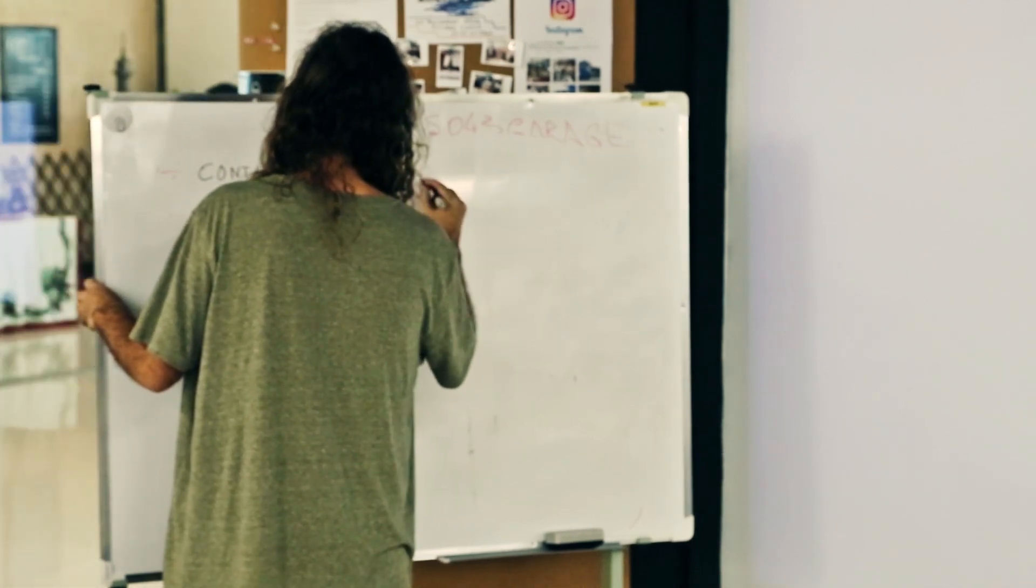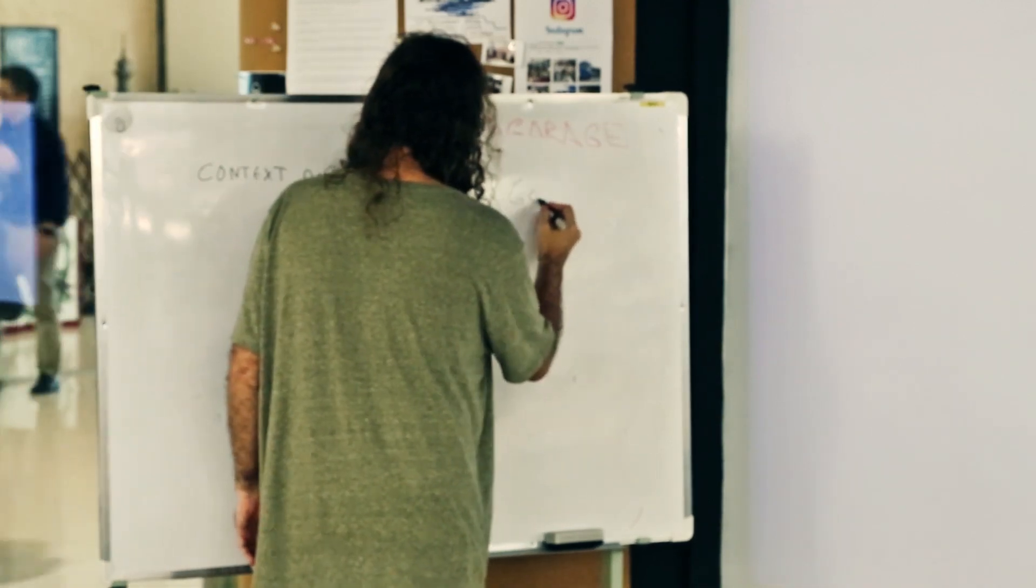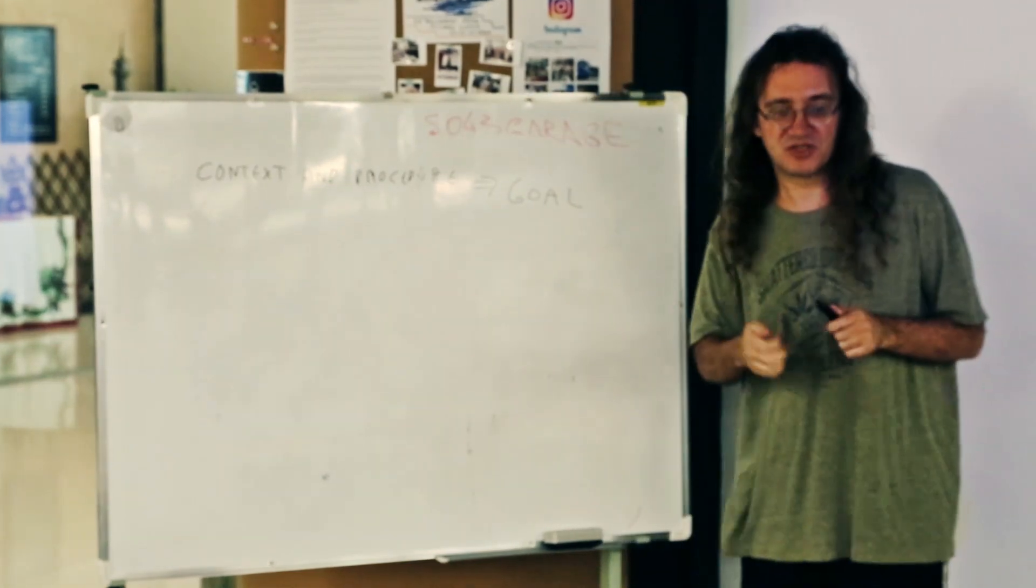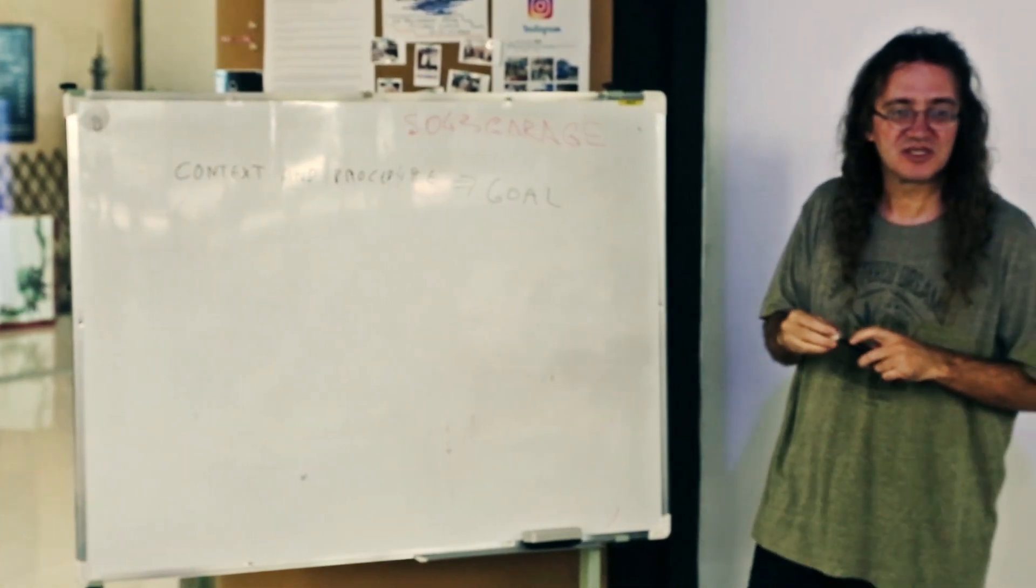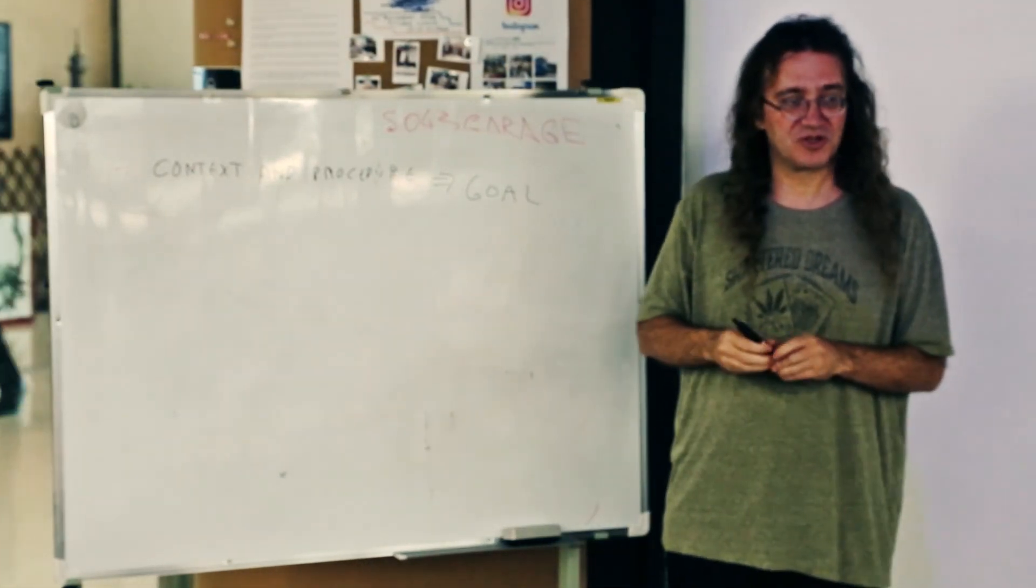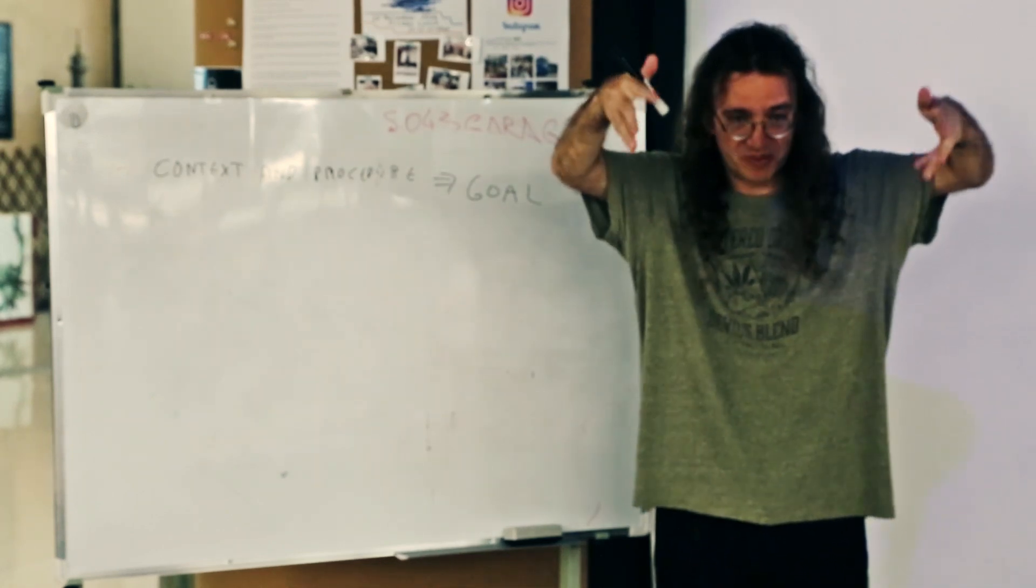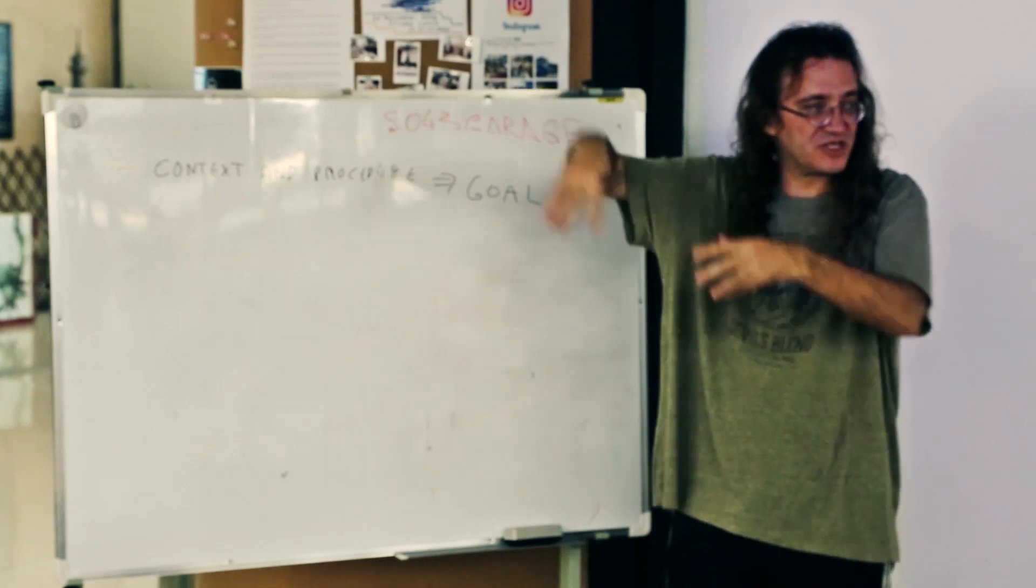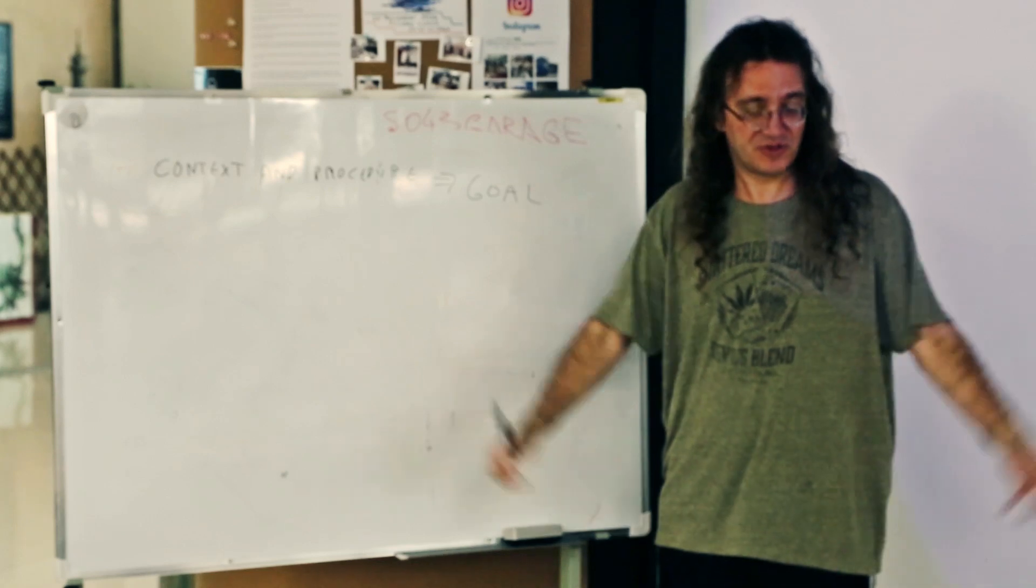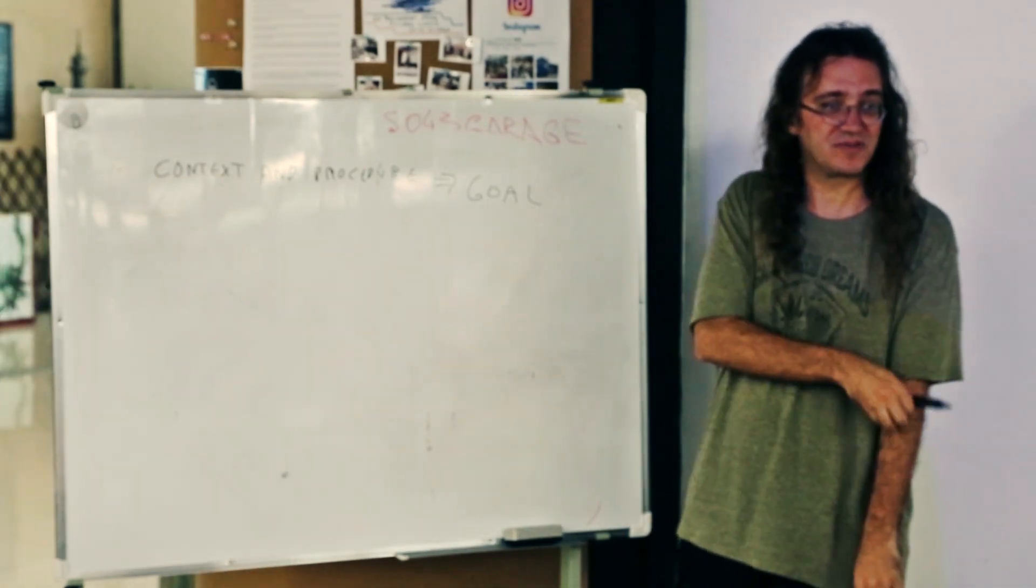The more general aspect of it is based on having a bunch of implications in the atom space of the form: context and procedure implies goal. Which means if a certain context gets obtained at the moment and a certain procedure is executed, then a certain goal will be fulfilled to some degree. That's probabilistic implication.